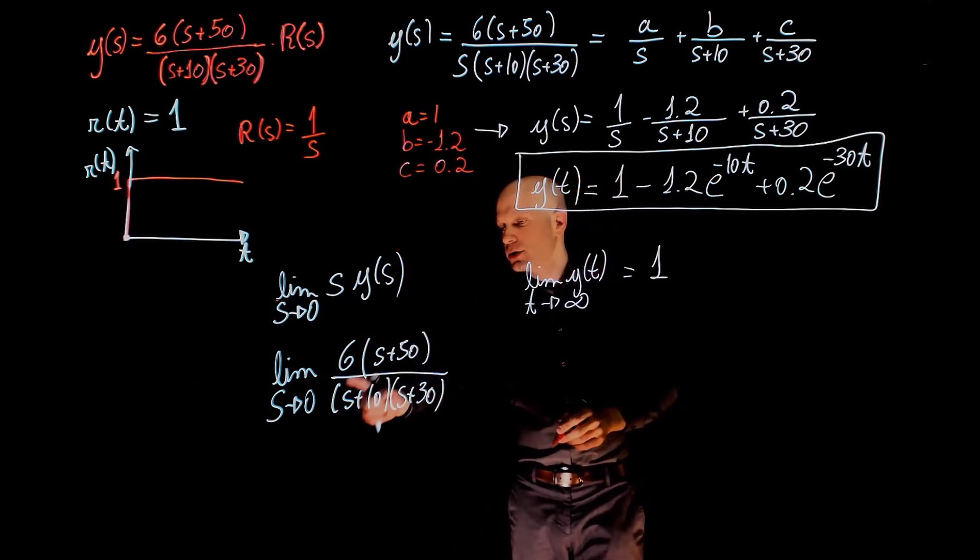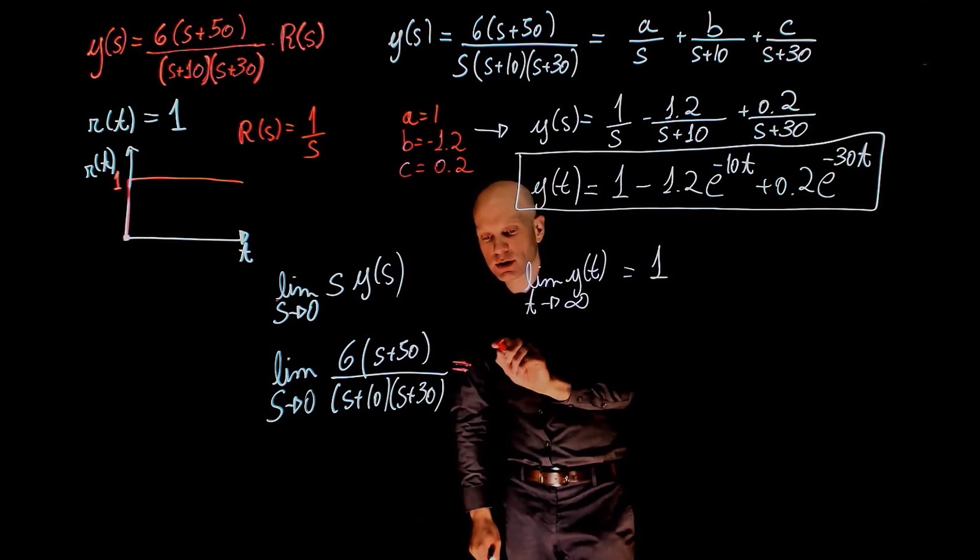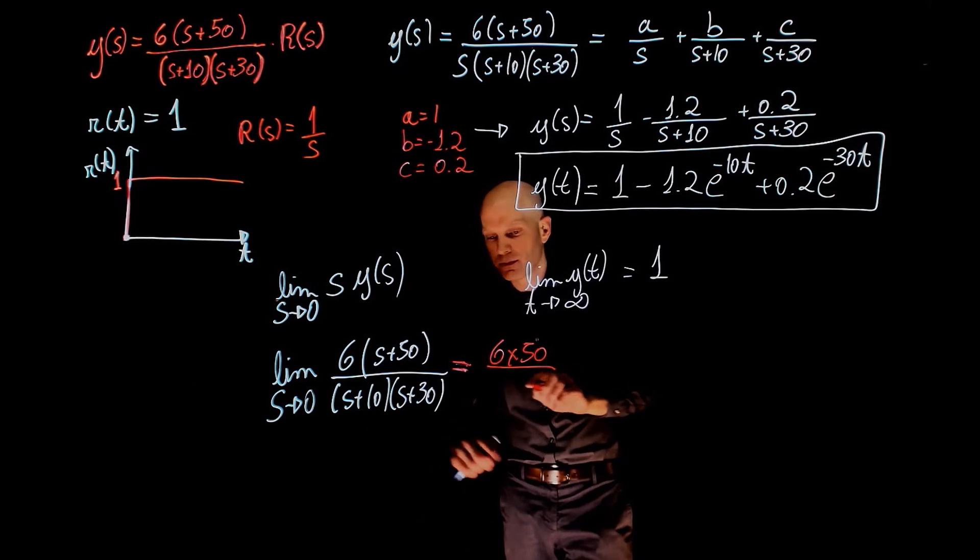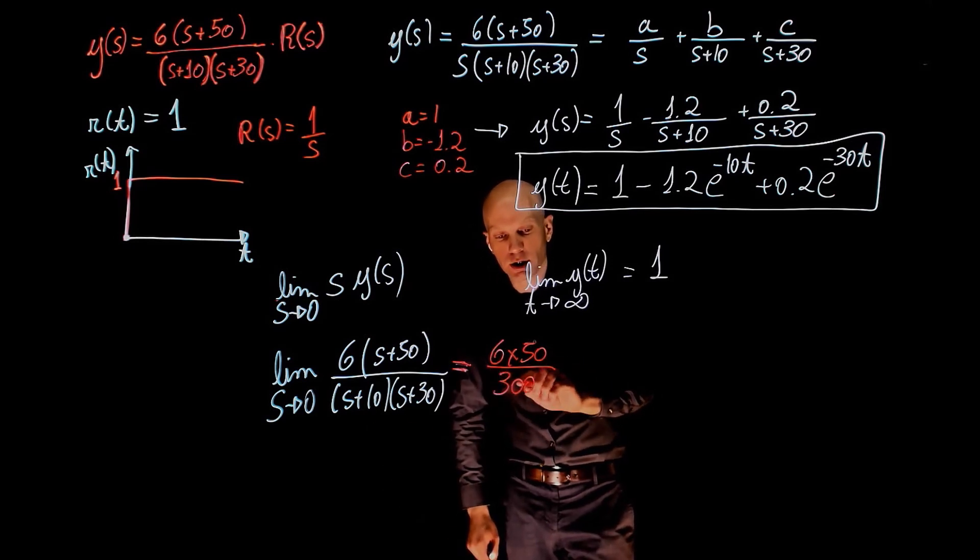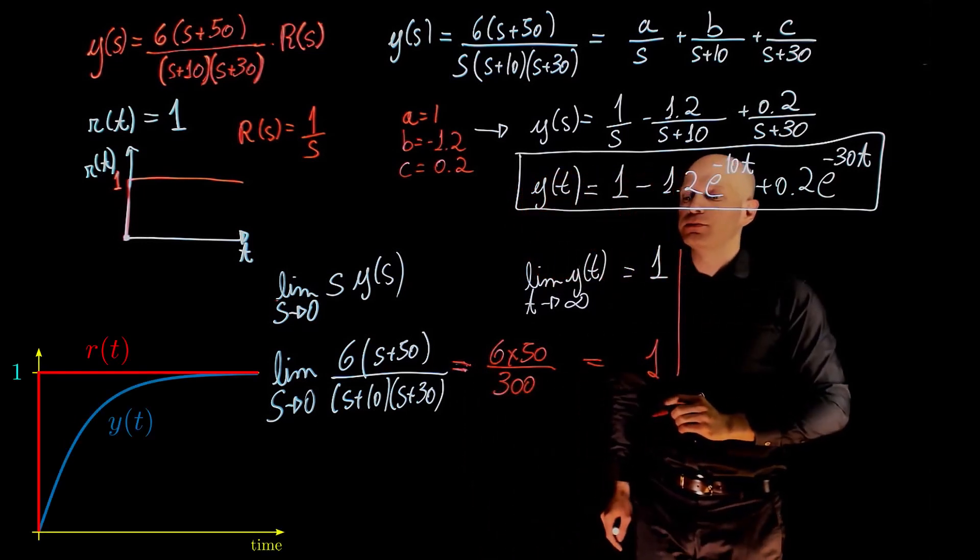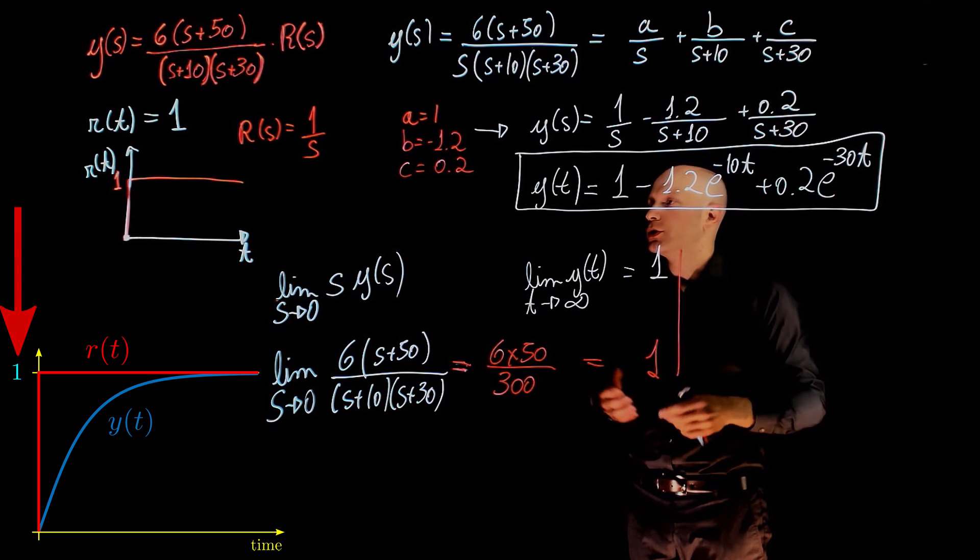When s tends to 0, this gives 6 times 50 divided by 300, which is, again, 1. And this is the final value of the printer position.